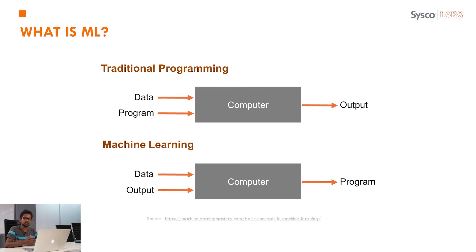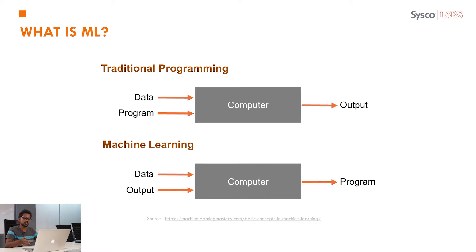We need machine learning concepts for such scenarios. In machine learning, we don't create a program ourselves. What we are doing is giving examples and the expected outputs, and the computer needs to come up with a solution — how to identify and how to classify things. We give the inputs and the expected outputs, and the computer needs to understand how they are mapped and come up with a solution. That's the concept of machine learning versus traditional programming.